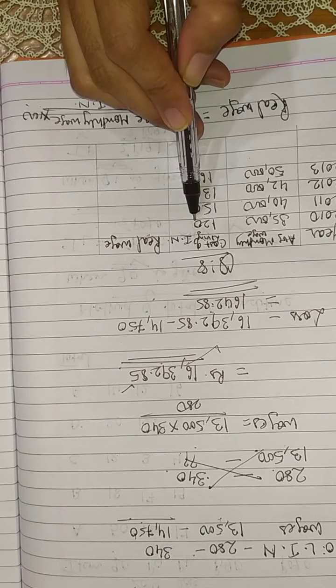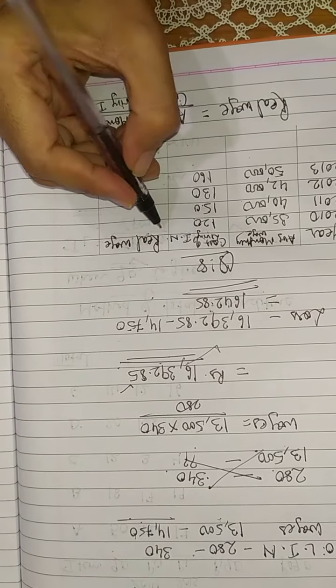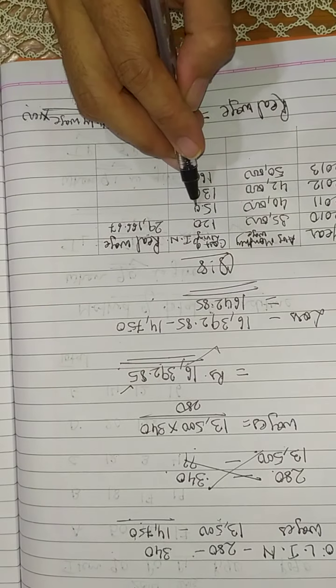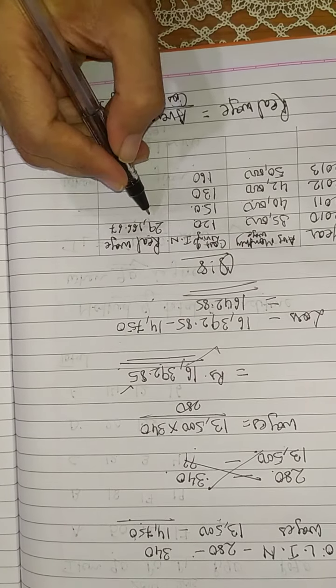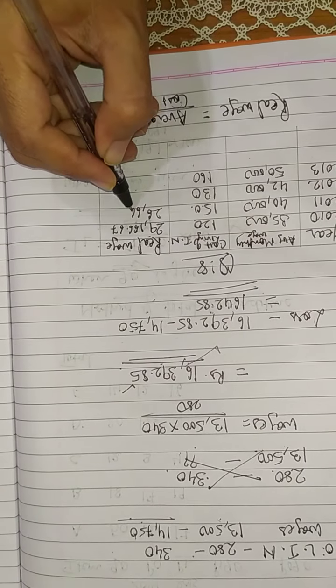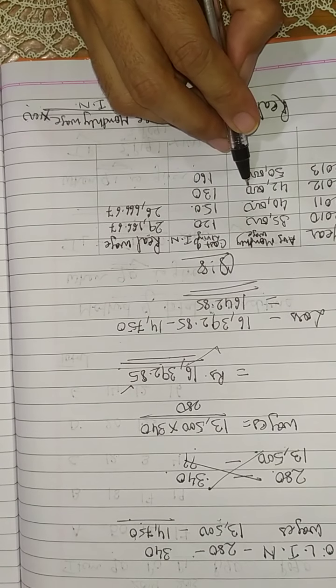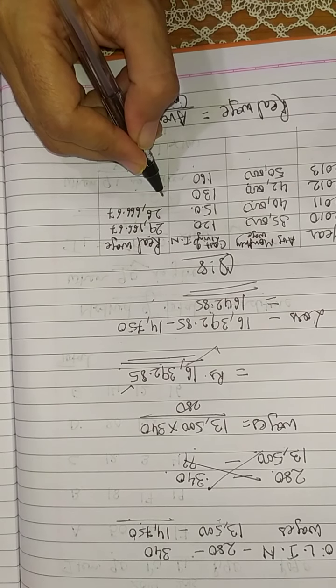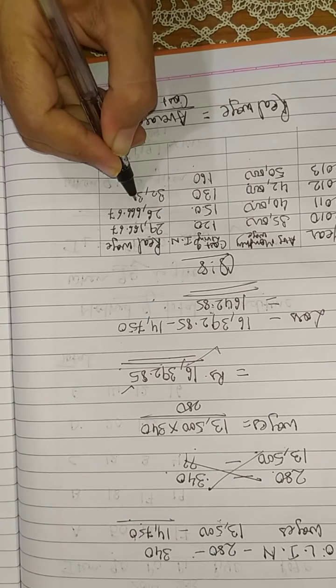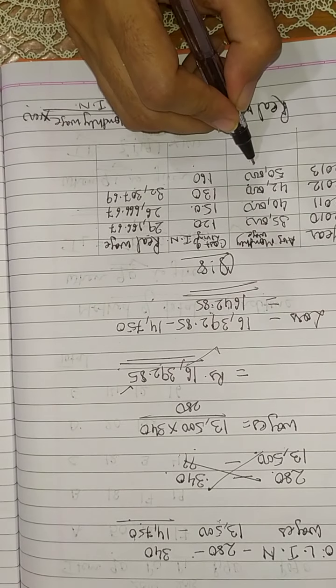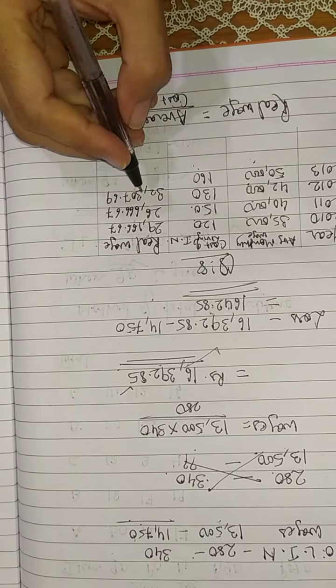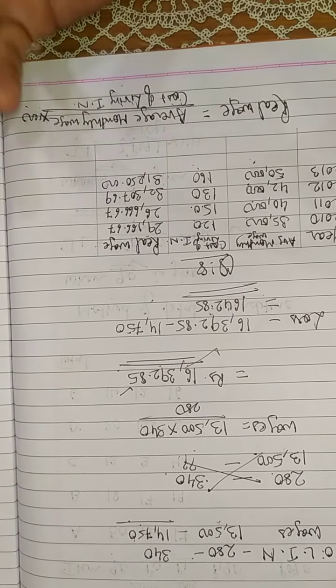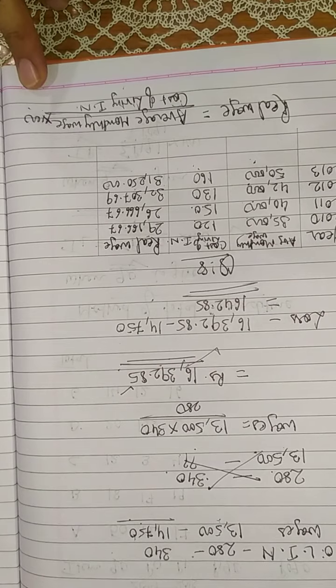35,000 divide by 100, you will get the real wages. 40,000 divide by 150 into 100, 266.67. 42,000 divide by 130 into 100. 50,000 divide by 160 into 100. Real wages. Very simple, very easy. Just learn the formula.